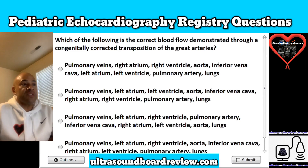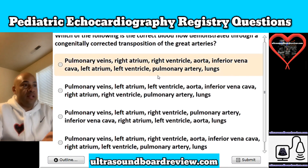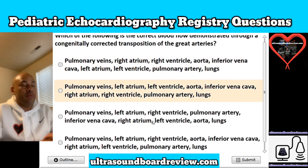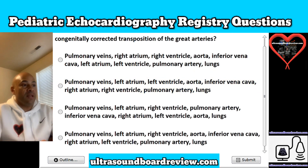Question 4. Which of the following is the correct blood flow demonstrated through a congenitally corrected transposition of the great arteries? A: pulmonary veins to right atrium to right ventricle to aorta, inferior vena cava to left atrium to left ventricle to pulmonary artery and then to the lungs. B: pulmonary veins to left atrium to left ventricle to aorta, inferior vena cava to right atrium to right ventricle to pulmonary artery and then the lungs. C: pulmonary veins, left atrium, right ventricle, pulmonary artery, inferior vena cava, right atrium, left ventricle, aorta, and then the lungs. Or D: pulmonary veins, left atrium, right ventricle, aorta, inferior vena cava, right atrium, left ventricle, pulmonary artery, and then the lungs?